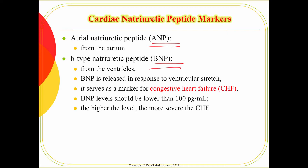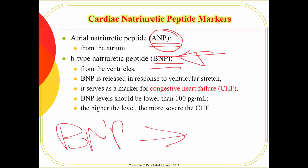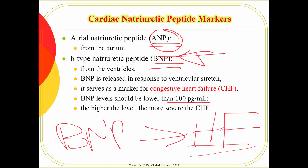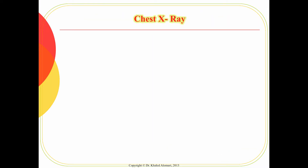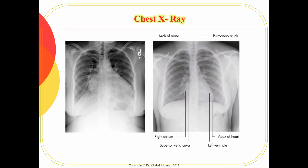We mainly focus on the ventricles, so BNP is the primary concern. BNP is the major indicator for heart failure and should normally be below 100 pg/mL. The higher the number, the worse the heart failure.